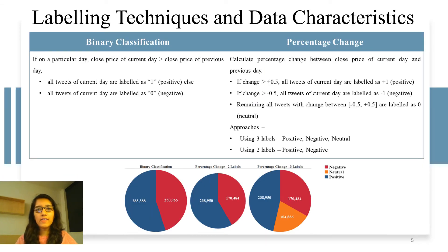To label the stock tweets data set we have in total three techniques. Using the binary classification technique the close price of the day the tweet was posted is compared with the close price of the previous day. If the current day's close price is more than the previous day's close price all the tweets of that day are labeled as positive. If it is less than the previous day's close price the tweets are labeled as negative.